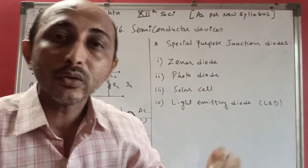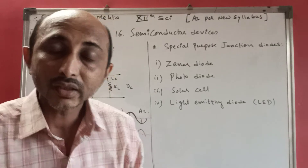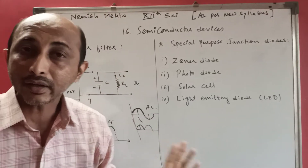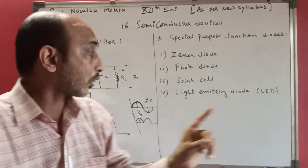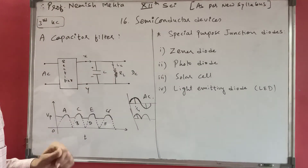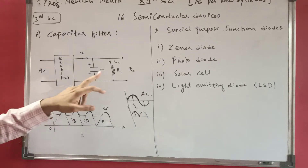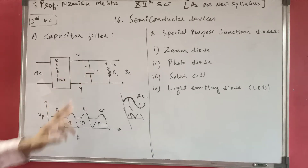This charging and discharging process is repeated a number of times because of the capacitor, creating points A, C, E, G on the waveform - these are the capacitor charge-discharge cycles that smooth the DC output.